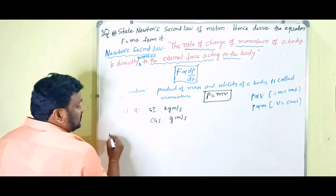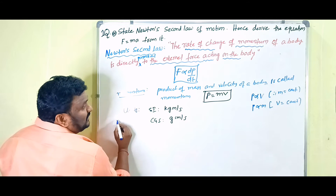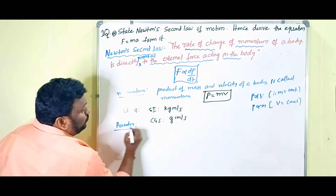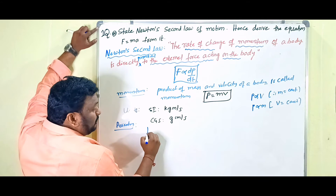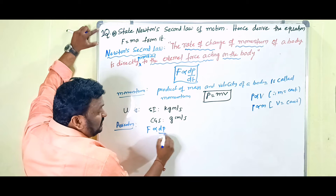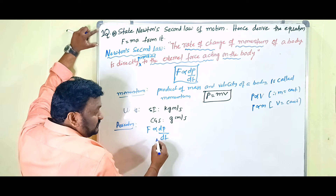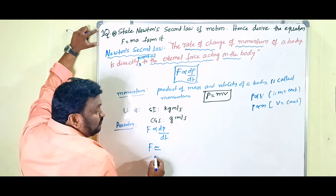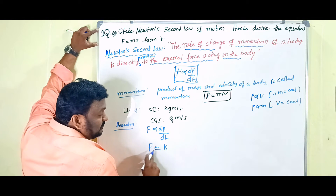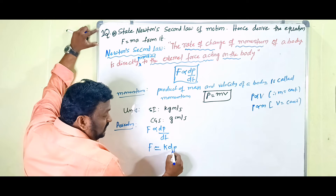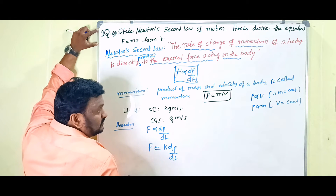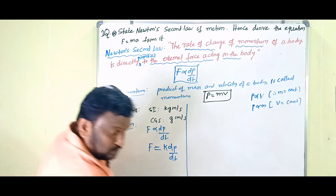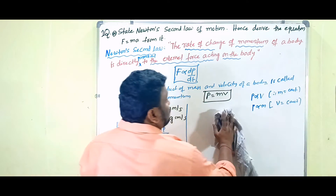Now, derivation of F equals ma. According to Newton's second law of motion, F is proportional to dP/dt. When we have a proportionality, to equate them we have to use one constant. So F equals k into dP/dt, where k is called the proportionality constant.